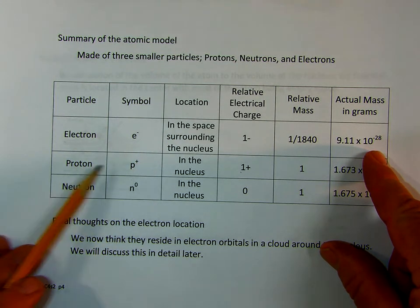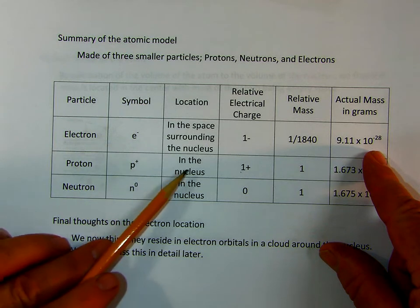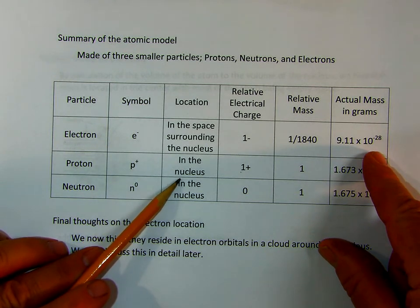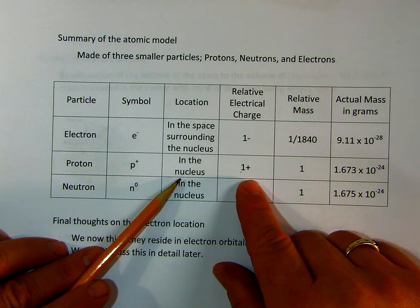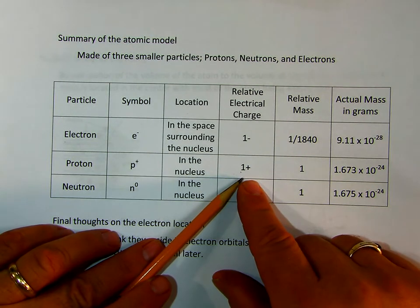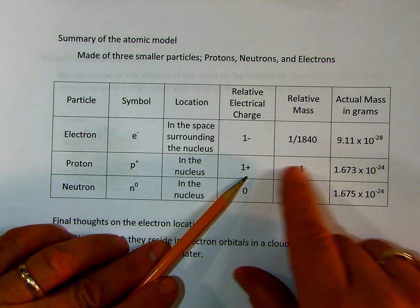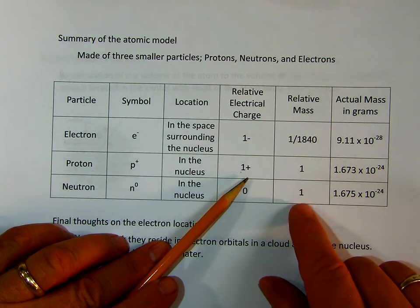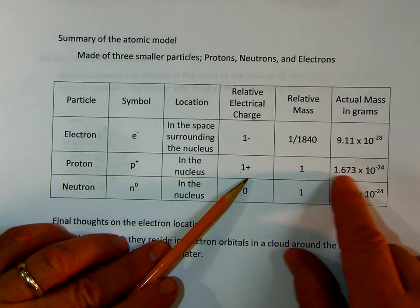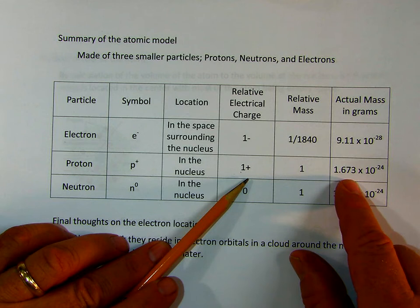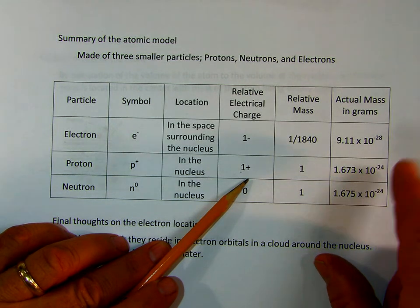The proton, with a p plus indication, is found in the nucleus with a relative electrical charge of plus one, the opposite of an electron. Its mass is one, the same as a neutron. Its actual mass is 1.673 times 10 to the minus 24 grams. Very, very small.